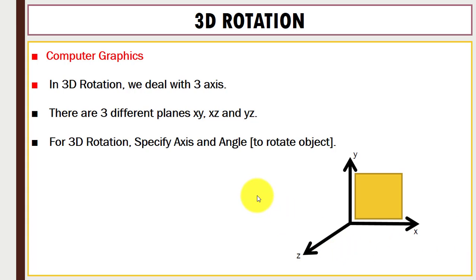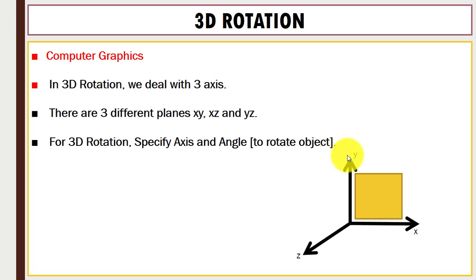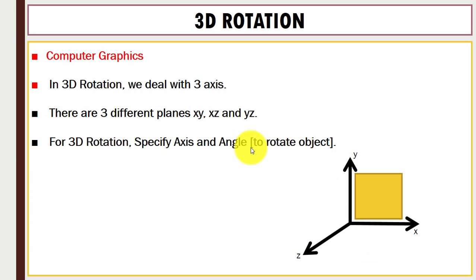In this video you will learn about 3D rotation. In 3D rotation we have three axes: x-axis, y-axis, and z-axis. In 2D rotation we only have x-axis and y-axis. In 3D rotation, we have three axes plus an angle for rotation. To rotate an object, we need to specify the axis and the angle.